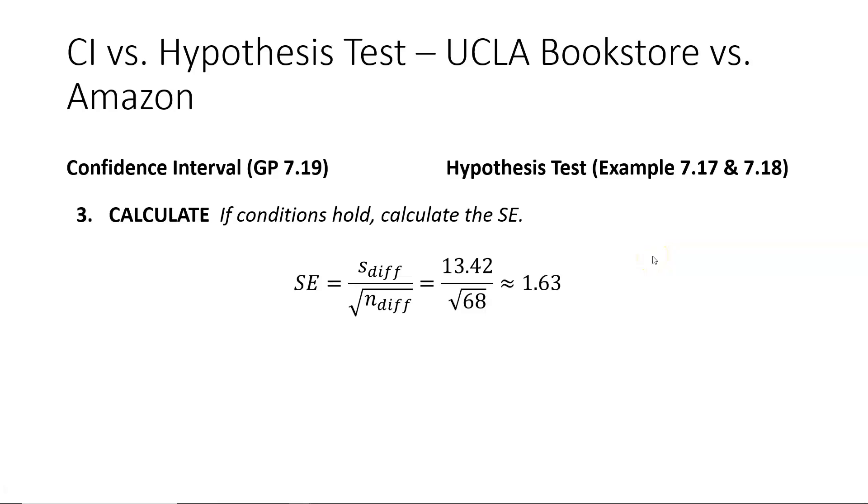Moving on to the calculate step for both inferential statistics techniques, we see that the standard error calculation should have been exactly the same for both of them. And we get a value of 1.63 for the standard error for both the hypothesis test and the confidence interval.